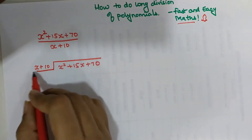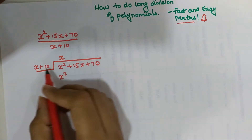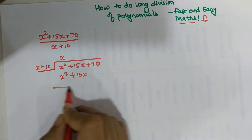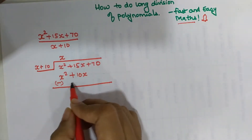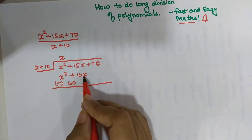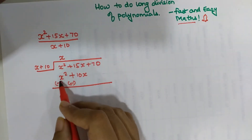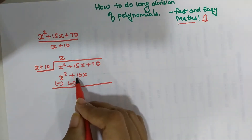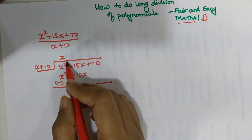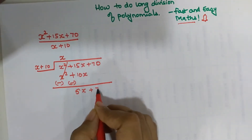So that I get x squared. When I multiply x with x I get x squared, and x multiplied by 10 gives plus 10x. The next step is very important: you need to subtract this, so the negative sign replaces all the signs of the numbers below. Here x squared minus x squared is cancelled, and 15x minus 10x gives 5x plus 70.